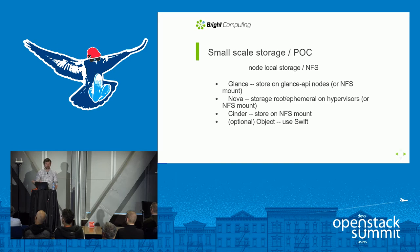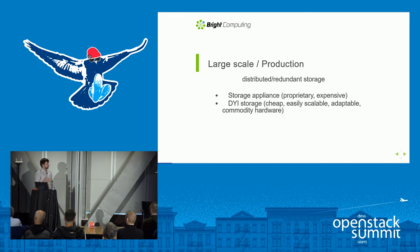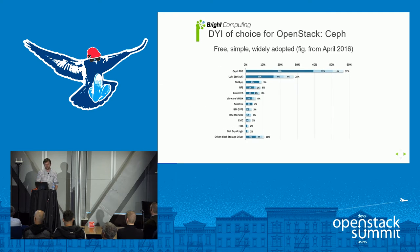When deploying a small-scale OpenStack cloud, many people go with reference drivers for Nova, Cinder, and Glance — typically NFS or local storage — just to get started. However, for larger scale or production deployments you typically want distributed and redundant network-based storage. Looking at the user survey conducted in our community, it's clear that when it comes to providing storage for Cinder and other services, Ceph is by far the most heavily used driver.